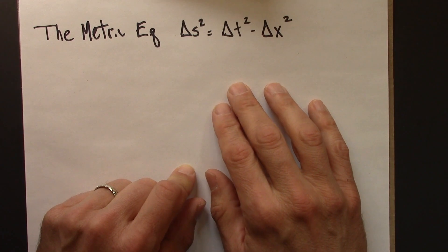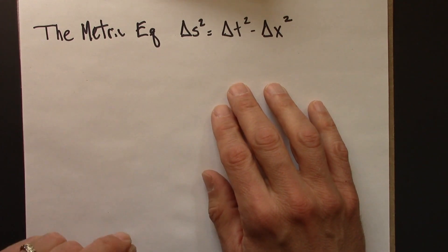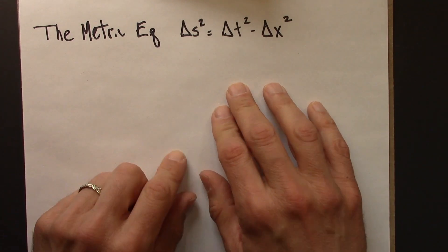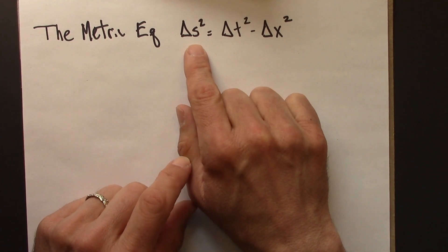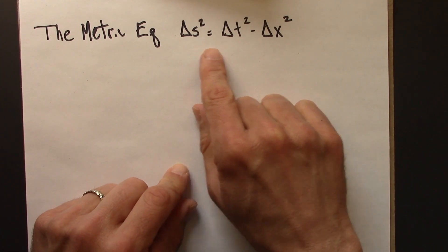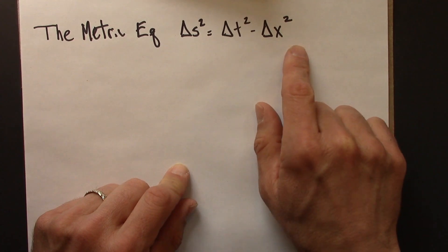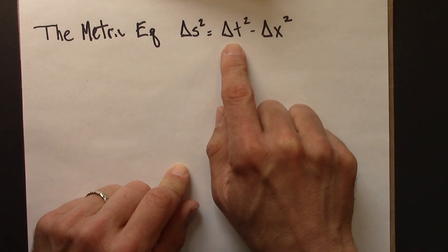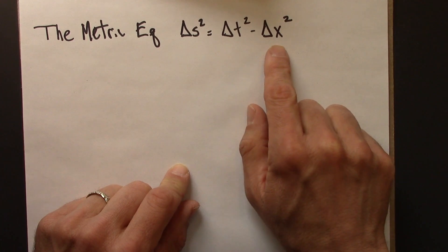So this is the metric equation. It applies to pairs of events, let's call them A and B. This is the spacetime interval between events A and B, and these are coordinate values in a particular reference frame. This would be the time difference between A and B, and this would be the spatial difference between events A and B.